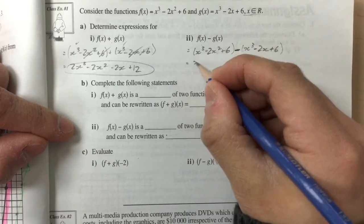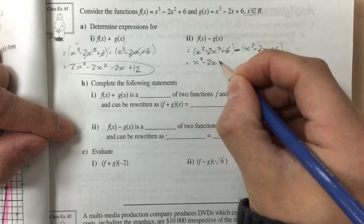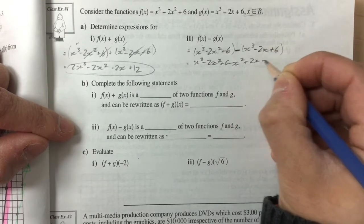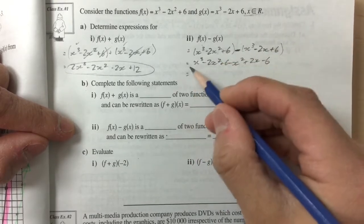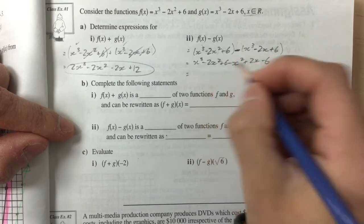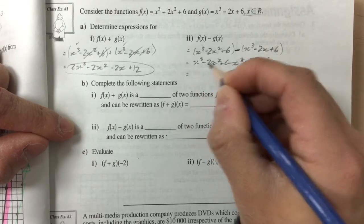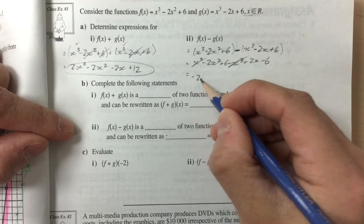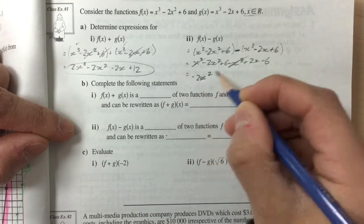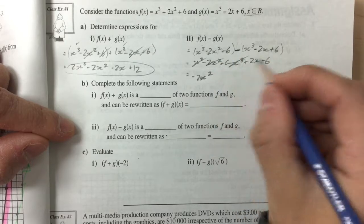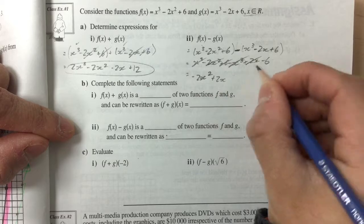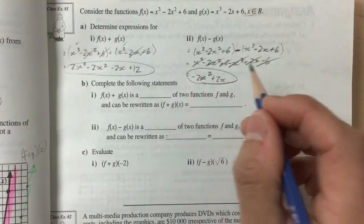Upon simplification, if I rewrite this, x cubed minus 2x squared plus 6 minus x cubed plus 2x minus 6, we're going to end up with x cubed subtract x cubed. We have negative 2x squared, we have positive 2x, and we have positive 6 subtract 6. And so here's our final function.